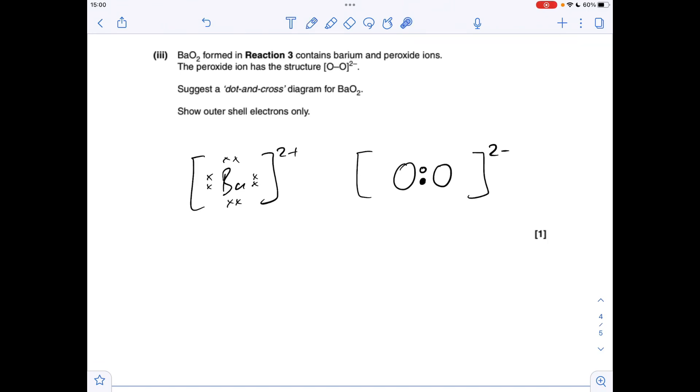So oxygen's in group 6, so we need another 5 of each type of electron. So there they are there, and all we need to do now is show the 2 minus charge. Well, obviously, we've gained two electrons, and they'll have come from the barium. So they need to be crosses, because I used crosses for my barium, and that's it.